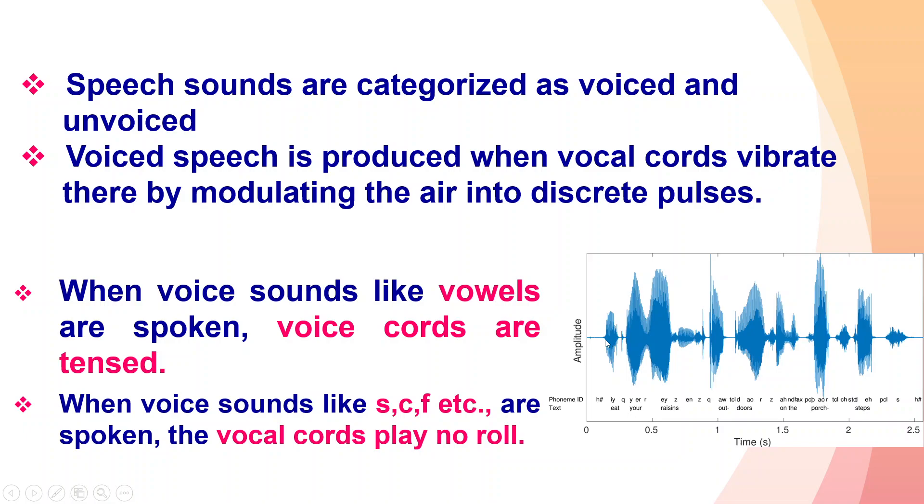The high amplitude sounds are like vowels. If we pronounce A, E, I, O, U, we will have high amplitudes. If we pronounce voiced sounds like S, C, F, the amplitude is very low. This is a graph showing human sounds.